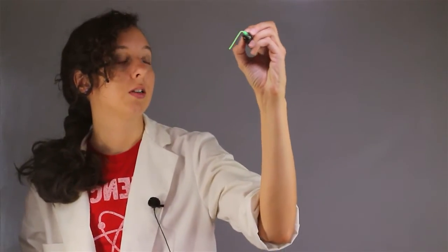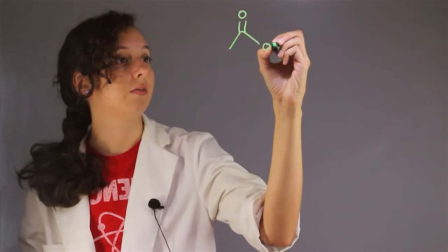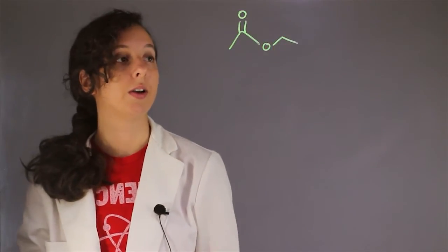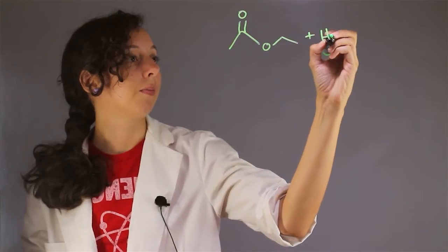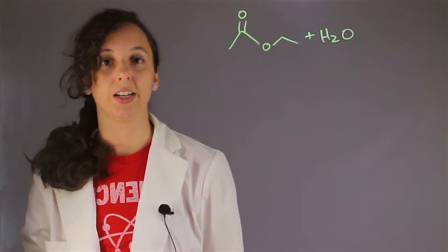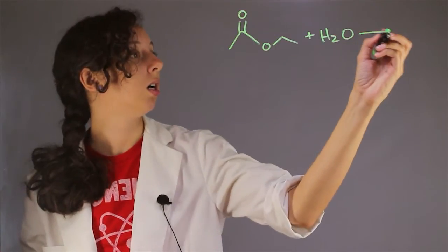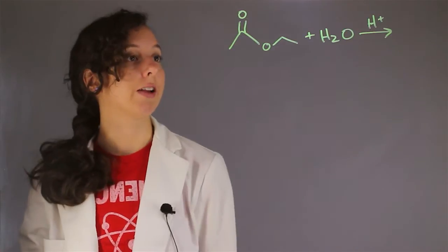So let's look at an example. Let's just take a typical ester. So we've got our carbonyl, we've got our ester functionality group, and we are going to cleave this with water. And one type of hydrolysis is under acidic conditions, so we're going to do that too. Have a little bit of H plus in our reaction.